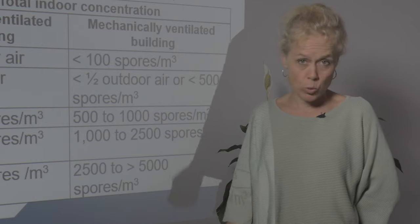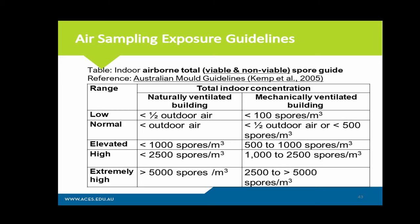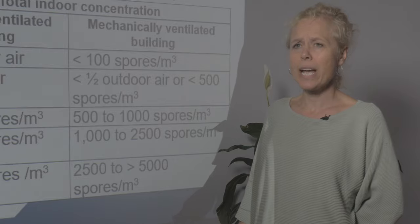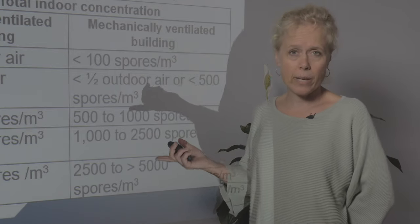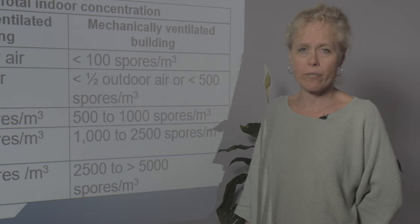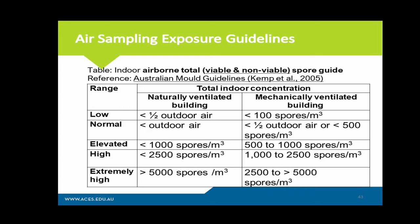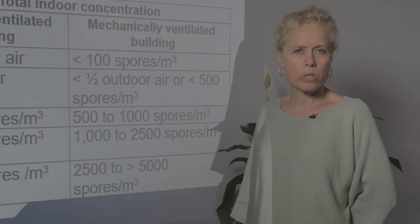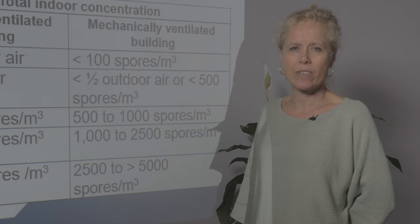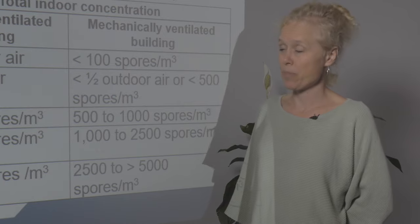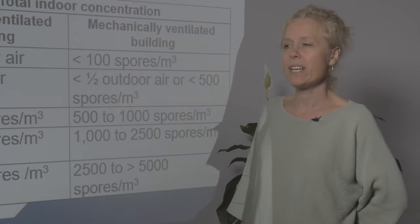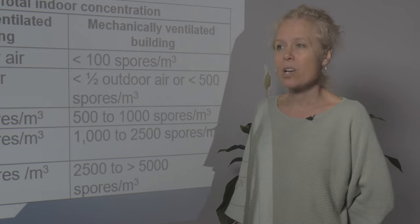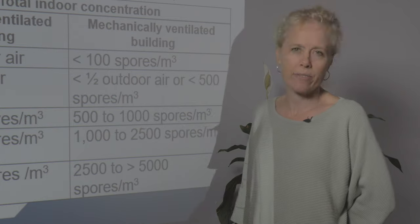For air sampling exposure guidelines, I like the Australian mould guidelines because they use the outdoor as the control and don't give fixed figures until levels become high. They also have separate guidelines for naturally ventilated versus mechanically ventilated buildings — important because an HVAC system will filter most outdoor spores, whereas a naturally ventilated home built in the eighties can be quite drafty. You'll find many outdoor spore types, like ascospores, in higher levels inside, and that's not necessarily a problem.